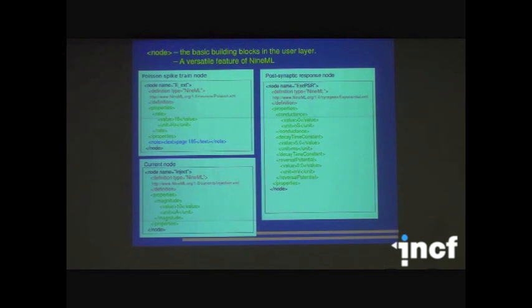And last, you can have free-form text to write anything that you want to tell other users. And the node element at this top level is a basic building block in the user layer. Many things can be a node in the user layer. For example, a Poisson spike generator can be a node, and it points again to a NineML specification, abstraction layer specification. And for Poisson spike generator, you just need to specify the firing rate.